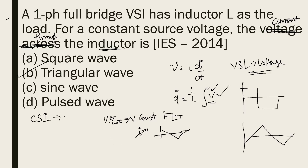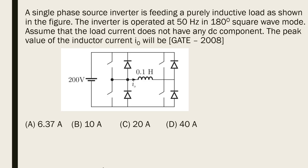To summarize: for a voltage source inverter, voltage is constant meaning voltage is rectangular and current is variable — specifically a triangular wave. Similarly, for a current source inverter, current is constant meaning current is rectangular and voltage is variable — also a triangular wave. Based on this key conclusion, these types of questions can be solved very easily.